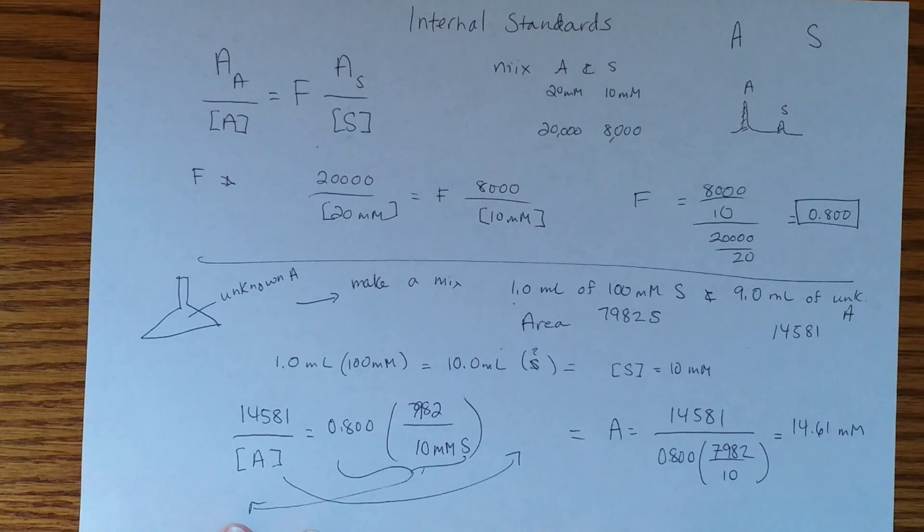So multiply by 10, divide by 9, and we end up with 16.23 millimolar of your analyte. And so you have done an internal standards calculation. Cheers!